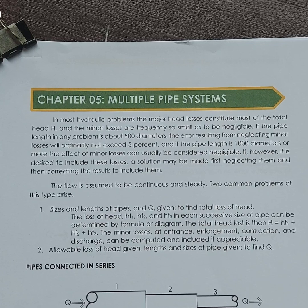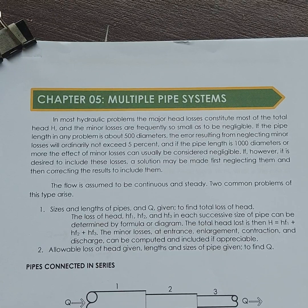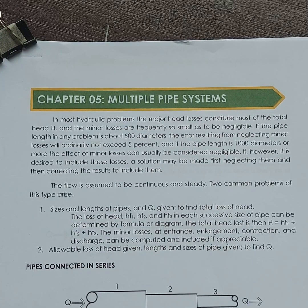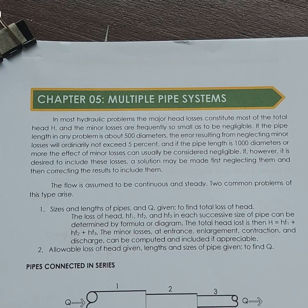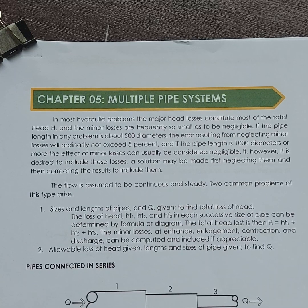So let's start with chapter 5. Our topic is multiple pipe systems. We've been dealing with pipes. I think that should be the last topic, probably. Later on we will be dealing with channels, open channels. Last topic with pipes. Maybe we can discuss other topics relative to pipes if we still have time during the final term.